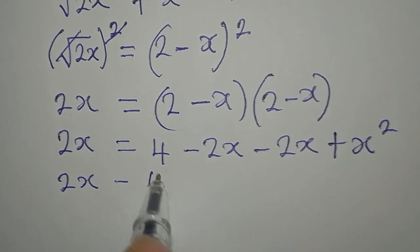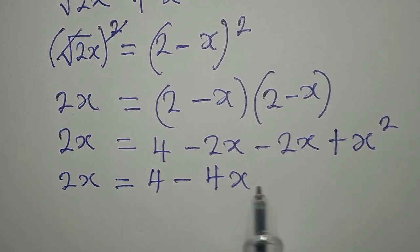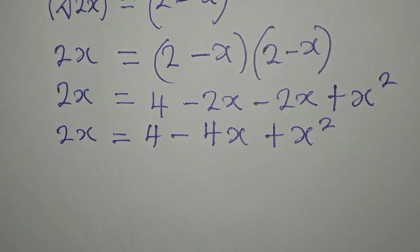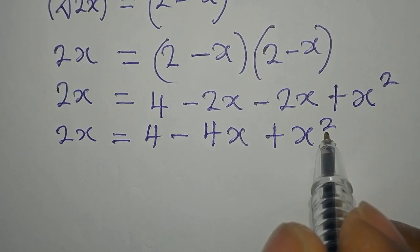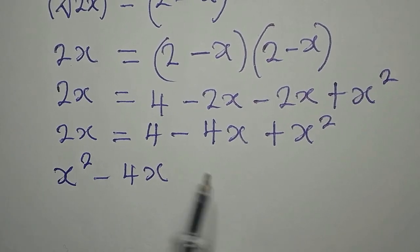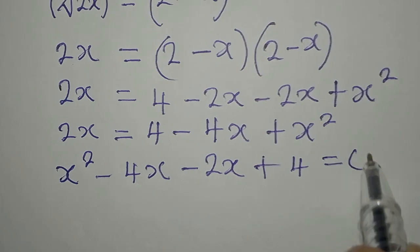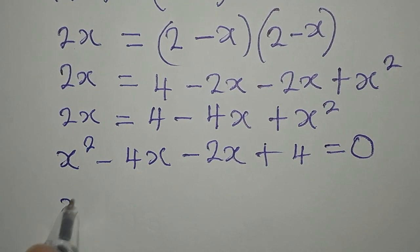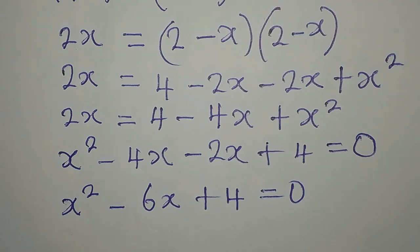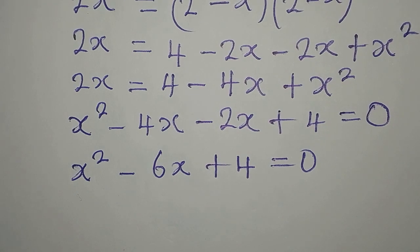So we have 2x equals 4, then putting the two minus 2x terms together gives minus 4x, plus x squared. Let's arrange this as a proper quadratic equation: x squared minus 4x minus 2x plus 4 equals 0, which becomes x squared minus 6x plus 4 equals 0.